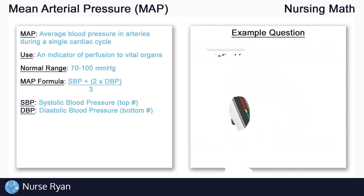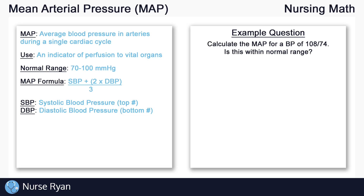Let's do an example. How do we calculate the MAP for a blood pressure of 108 over 74? And then let's determine if that is within the normal range. First, let's write out our formula: systolic blood pressure plus 2 times the diastolic blood pressure, all divided by 3.